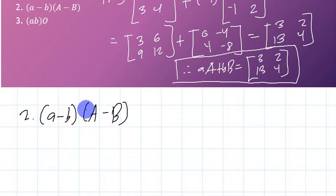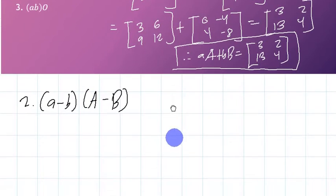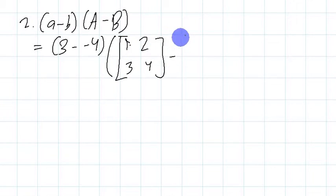Let's just place that one here. If we're going to literally write it as is, this is actually 3 minus negative 4 multiplied to A minus B, which is 1, 2, 3, 4 minus 0, 1, negative 1, 2.